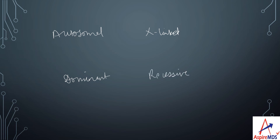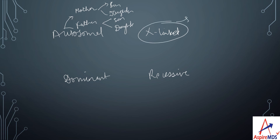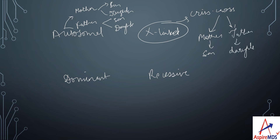When it is an autosomal disease, there won't be any partiality — a mother and father can transfer the disease to either a son or daughter in any case. Whereas in X-linked disease, we see a specific pattern called the crisscross pattern. In this crisscross pattern, the mother always transmits the disease to a son, and the father always transmits the disease to the daughter.